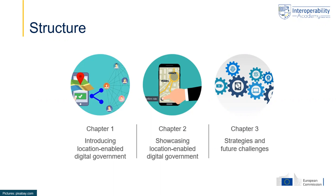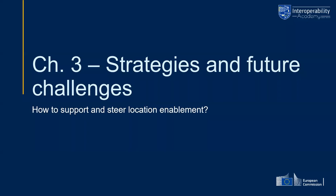In this third chapter, we will have a look at some existing strategies on location enablement of government and location enablement of society, but also the set of future challenges that still exist when we want to work on our location enablement. This chapter on strategies and future challenges is all about how we can support but also steer location enablement.